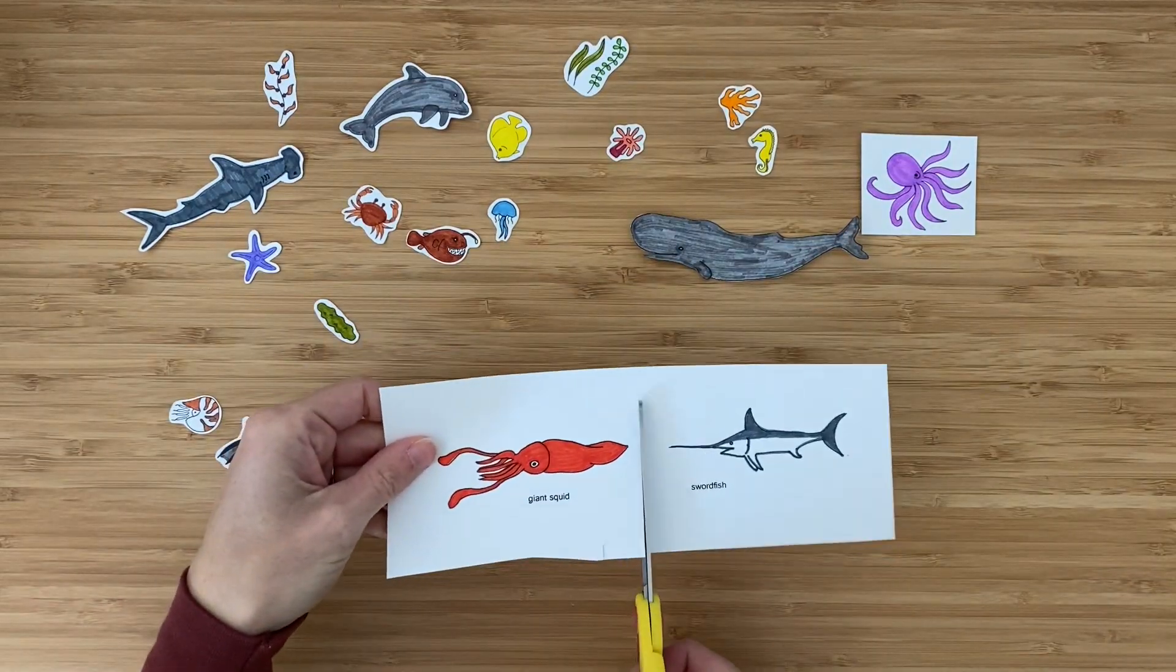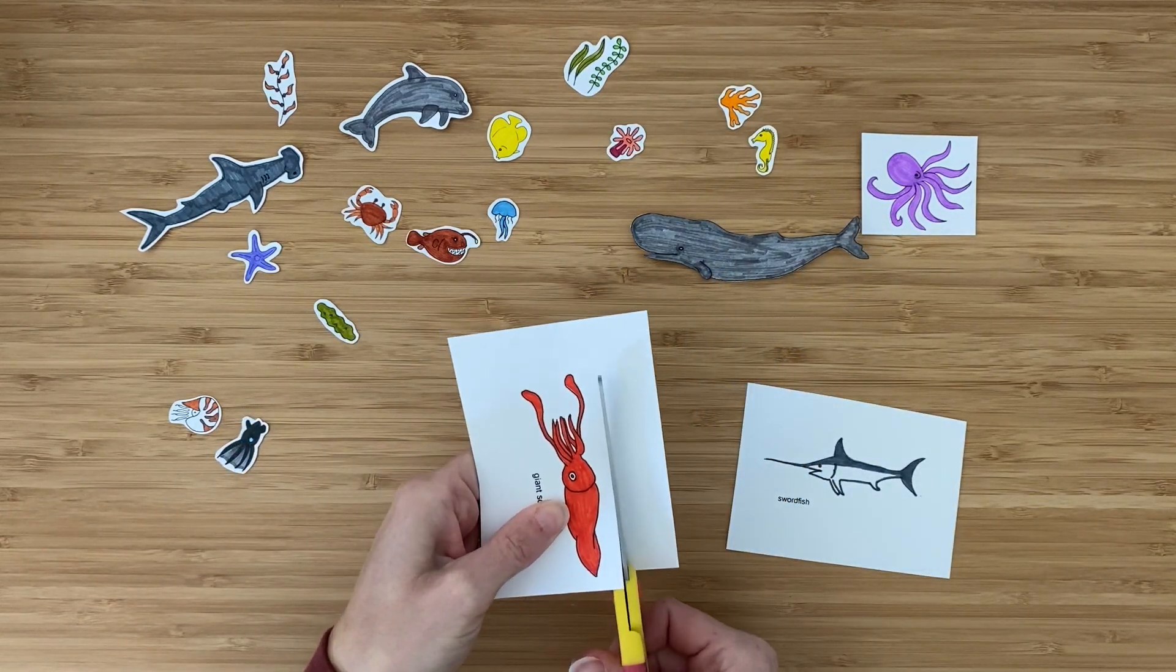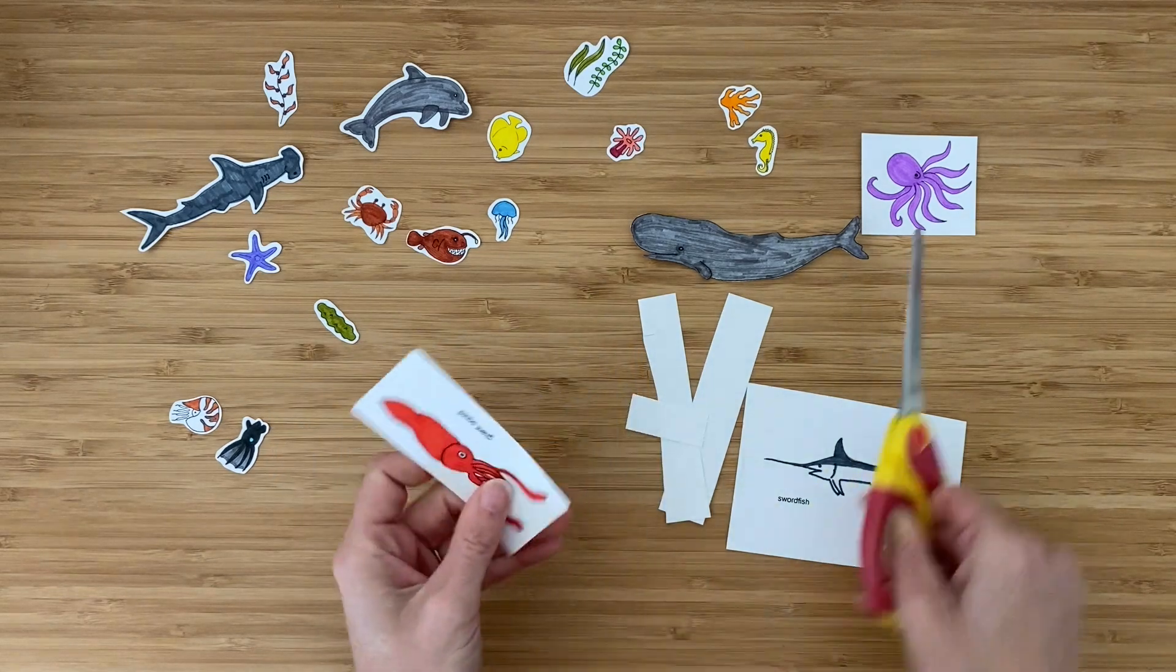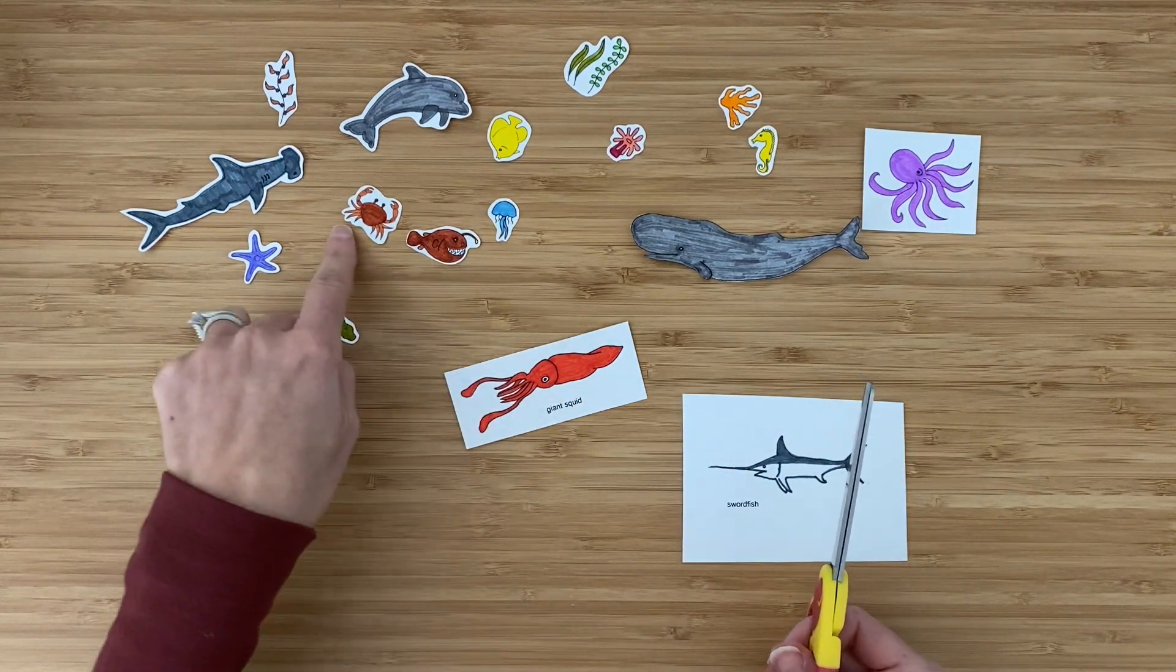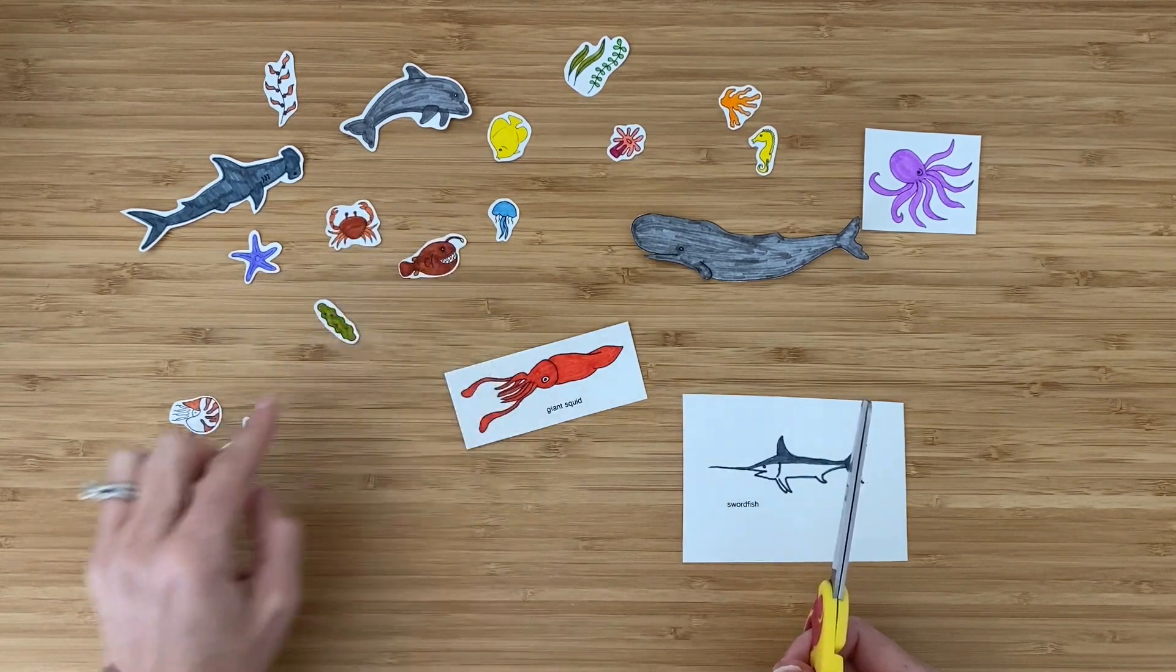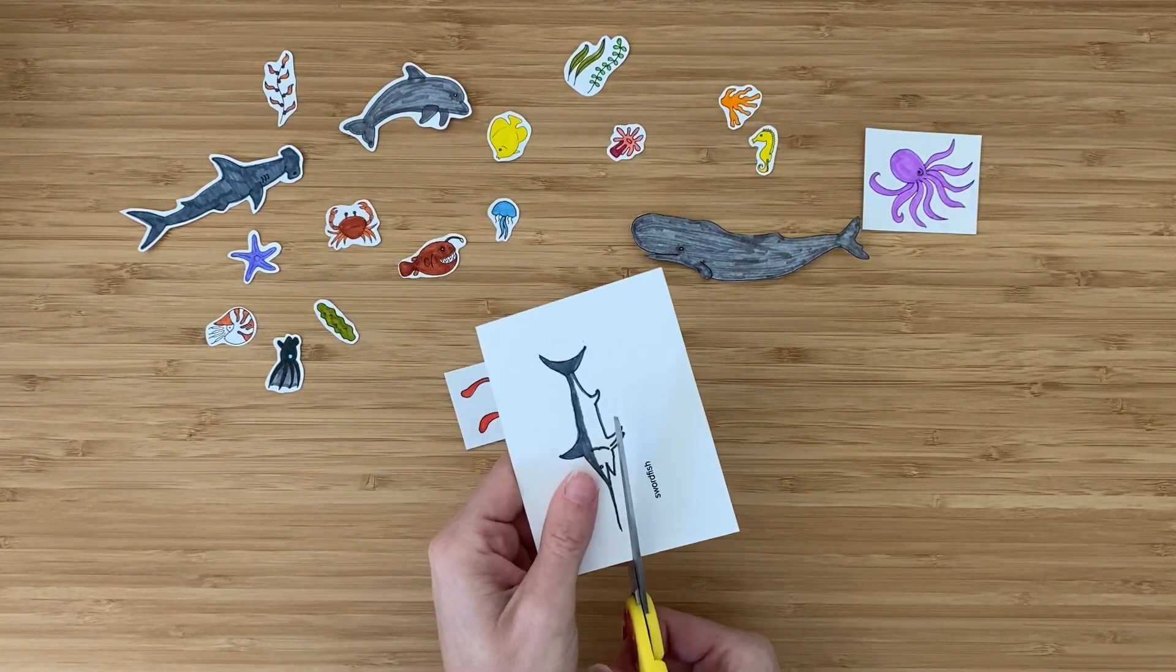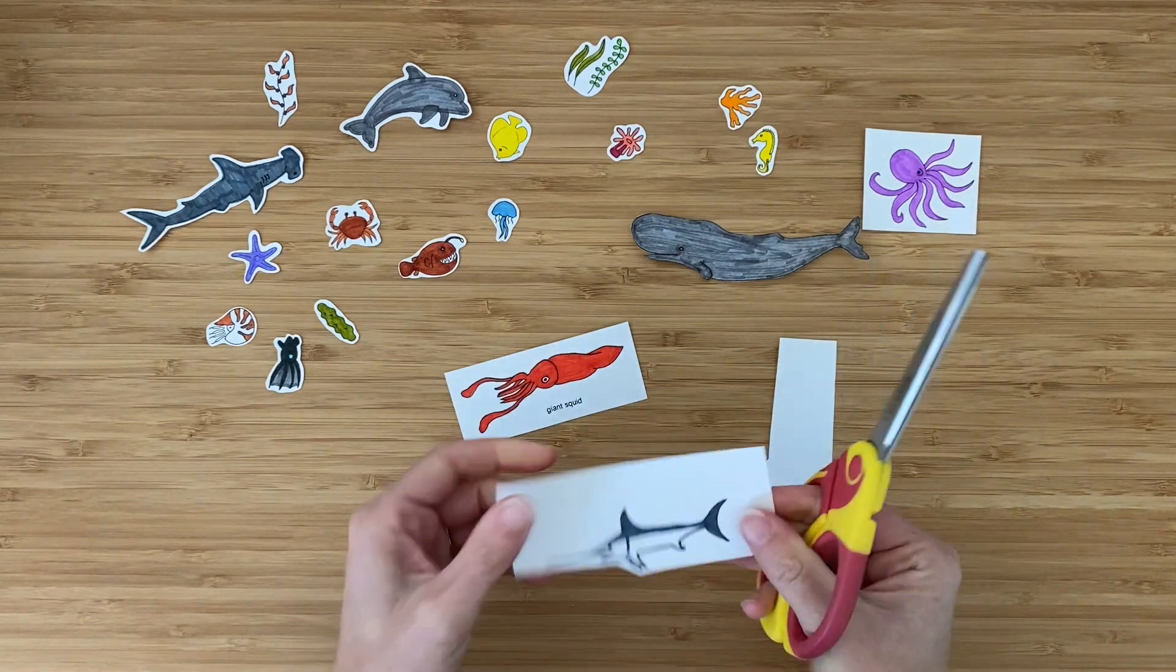Cut out the sea life in whatever manner is easiest for your child or your student. It might be easiest just to make squares or rectangles like this and like the octopus. It might be easier to cut around the edges if you want to include more animals. I did this because I want to put as many of these sea creatures as I can on there, and if I don't cut off the names, it's going to take up a lot more space. So cut however you would like.